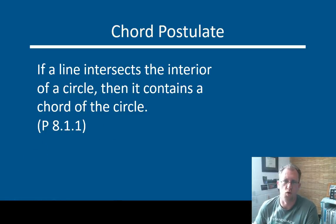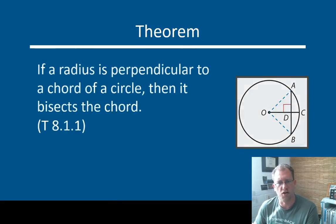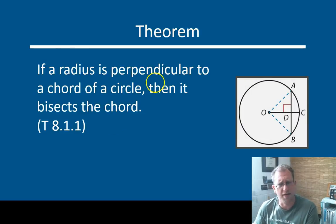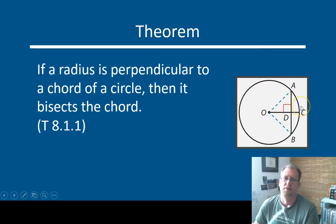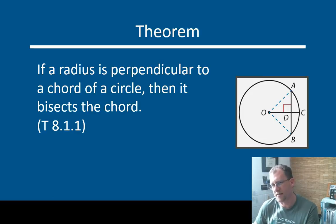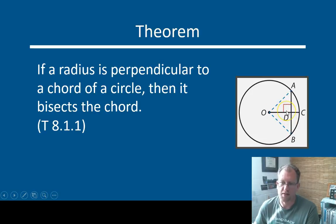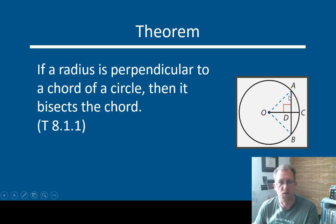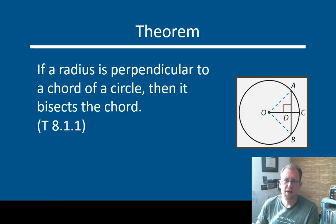Basically, it's the definition of a chord. A theorem we can use in conjunction with that is: if a radius is perpendicular to a chord, then it bisects the chord. It's kind of an interesting relationship. You can't draw a chord in a circle and have it intersect the radius such that the radius is perpendicular to the chord and not have it bisect the chord. Anytime you see a 90-degree intersection between a radius and a chord, that is a bisected chord. It's not immediately intuitive, but if you try to play with it in your brain, there's no other way to arrange that.